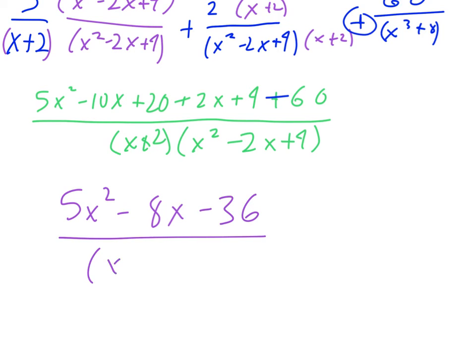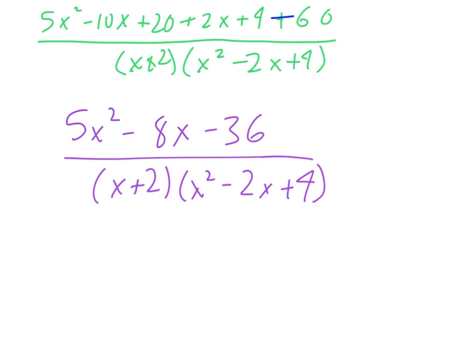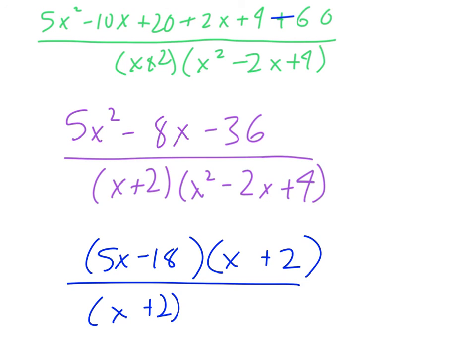And then the denominator x plus 2, x squared minus 2x plus 4 is what that would look like. And this does not happen every time, but the 5x squared minus 8x minus 36 does factor. And actually it factors as 5x minus 18 times x plus 2. Now that's important because we have an x plus 2 already in our denominator. And so those will actually cancel out. And again, the way that factors is we get a minus 18x and a plus 10x, which gives us the minus 8x.